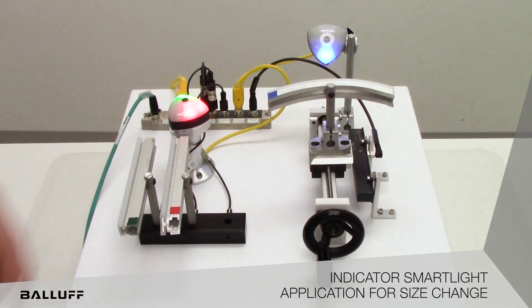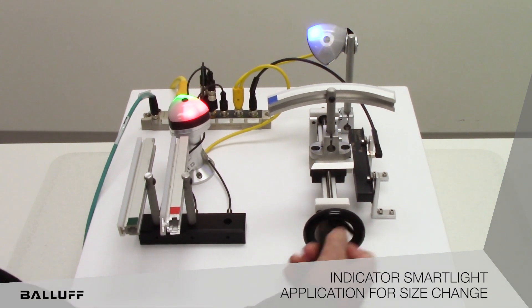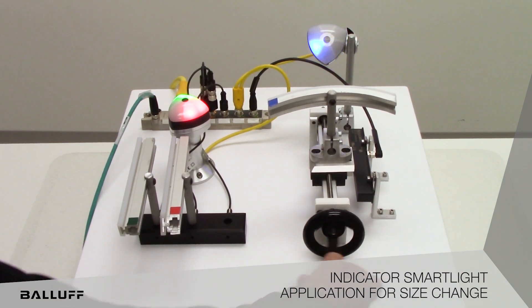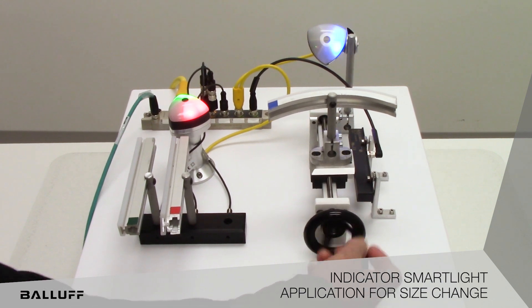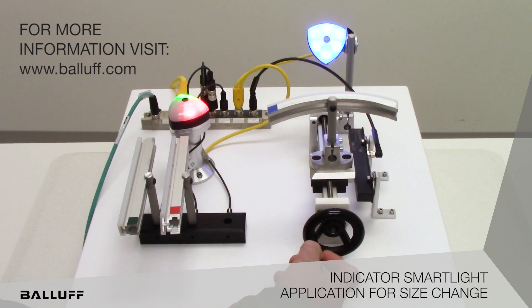In the same situation now you see the indicators again telling me to go clockwise, so I'm going to rotate this clockwise and the same situation happens as I get closer it slows down and starts to fill out its segments until I'm into position. And that's how our smart light indicators provide operator guidance for size change.